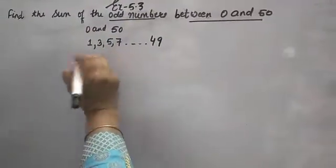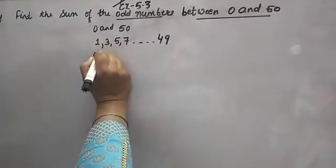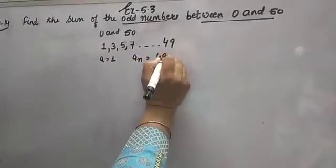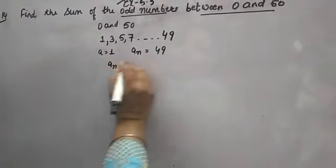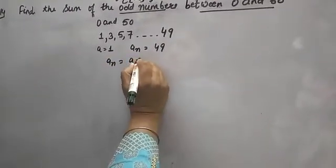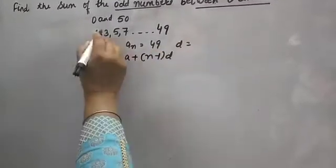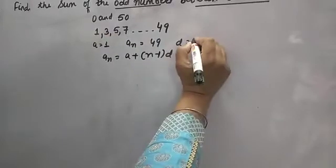Now you have to take n first. Look, the first term a is 1. An, the last term is 49. An formula is a plus n minus 1 into d. Here d, the common difference, 3 minus 1 is 2.